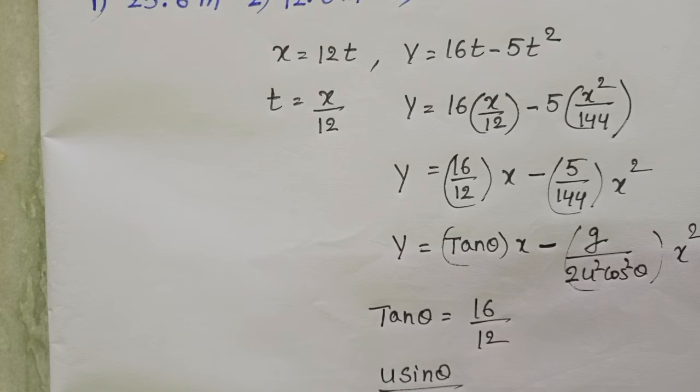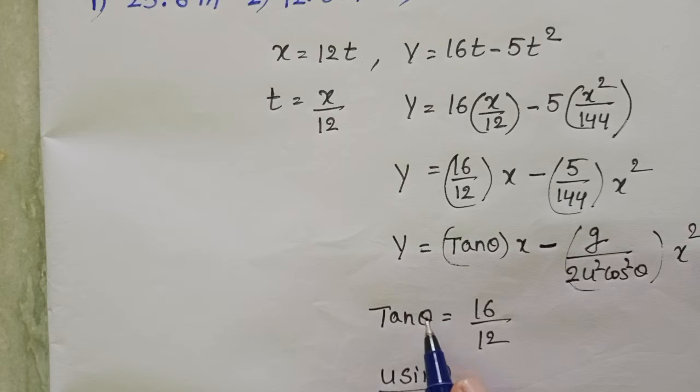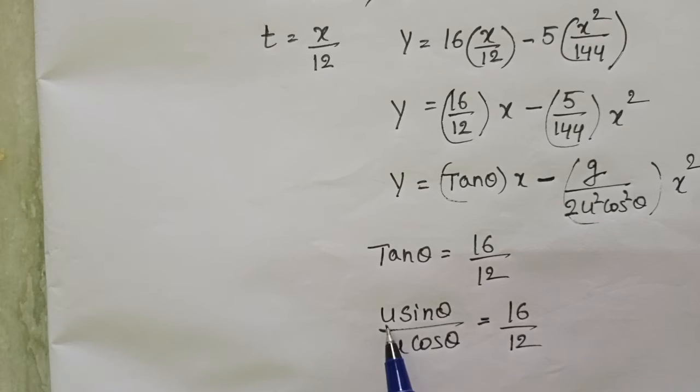u u get cancelled, sin theta by cos theta equals tan theta, so in place u sin theta by u cos theta equals 16 by 12. So from this, the vertical component of the velocity u sin theta equals 16.